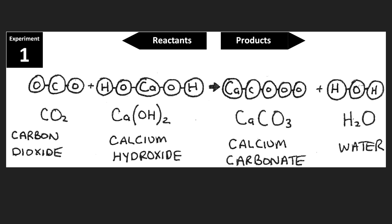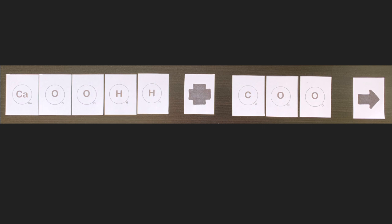What will happen is that all the atoms on the left side of the equation will rearrange themselves differently on the right side of the equation. Have your support station on experiment number one and point closely with your finger to the calcium hydroxide molecule. Next, point to the carbon dioxide molecule. On your table, with the support station as a guide, create the reactant side of this chemical equation. Take only the atom tiles needed for one calcium hydroxide molecule, one carbon dioxide molecule, one plus sign, and one arrow sign. Arrange your atoms only on the left side of the reaction, to the left of the arrow tile.